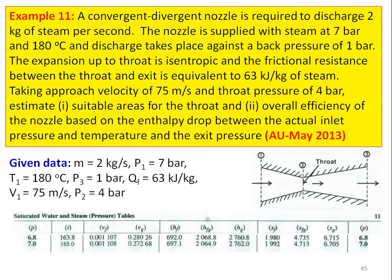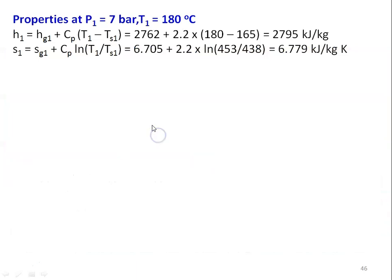From the steam table at 7 bar, the saturation temperature is 165°C, whereas the given temperature is 180°C, so the steam is superheated. Inlet properties at P1 = 7 bar, T1 = 180°C: H1 = Hg1 + Cp·(T1 − Ts1) = 2762 + 2.2 × (180 − 165) = 2795 kJ/kg. S1 = Sg1 + Cp·ln(T1/Ts1) = 6.705 + 2.2 × ln(453/438) = 6.779 kJ/kg·K (temperatures in Kelvin).